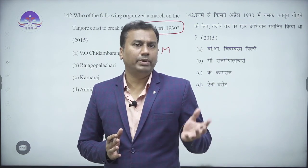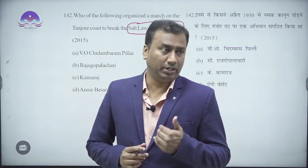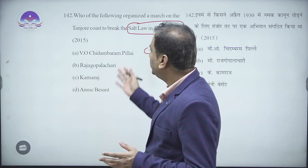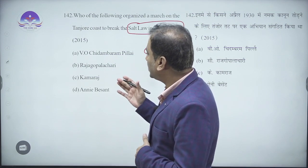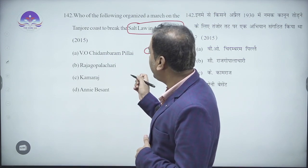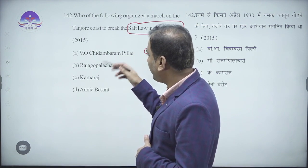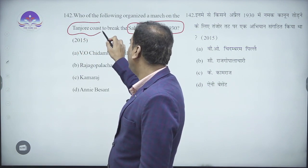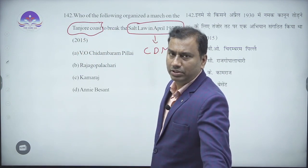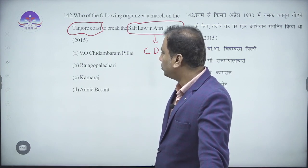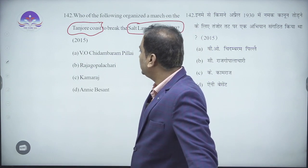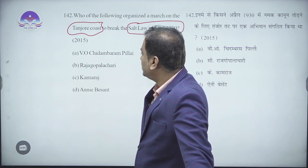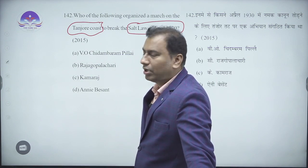Kerala coast and Tamil Nadu coast are particularly important in this context. The question is about the Tanjore coast, which is part of Tamil Nadu. Looking at the four options: the first is V.O. Chidambaram Pillai, second is C. Rajagopalachari, third is K. Kamraj, and fourth is Annie Besant.